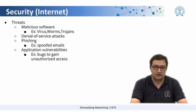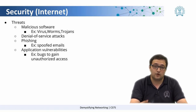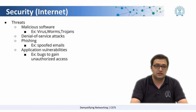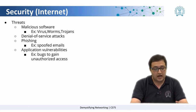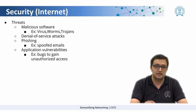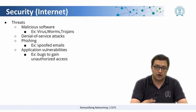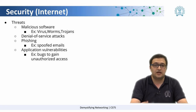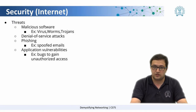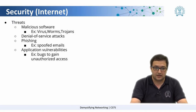The fourth threat is something called application vulnerabilities. Applications sometimes have bugs, and these bugs can sometimes be used to gain unauthorized access. Companies that make these applications are always trying to find and fix those bugs, and all those fixes come in the form of updates.